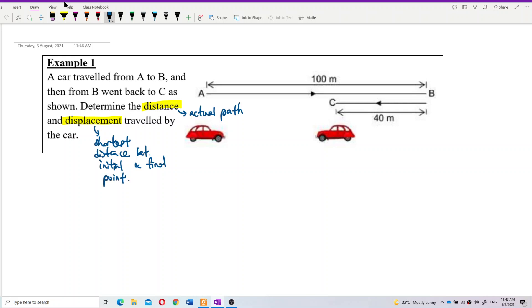So what is the distance travelled by this car from A to B and then B to C? The actual path is the whole journey. So the distance will be 100 plus 40, which equals 140 meters.